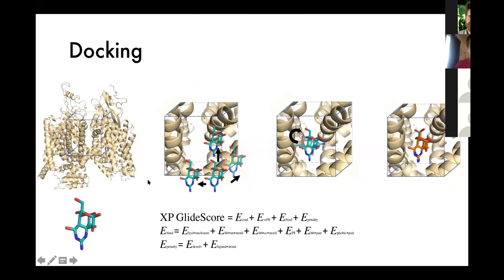Docking is a computational procedure where you take your ligand and receptor, draw a cube around where you think the binding region is, and then systematically translate, rotate, and sample internal degrees of freedom of the ligand within that cube to identify poses where favorable interactions are being made with your biomolecule. This is based on a semi-empirical score that includes Coulombic favorable charge interactions, van der Waals packing, and enclosure of hydrophobic surface area in the receptor.